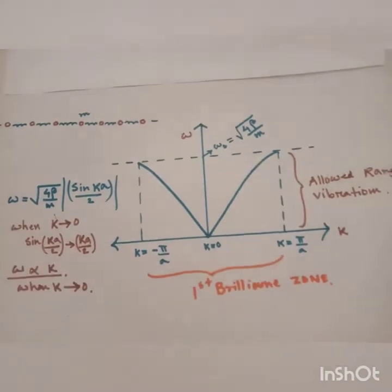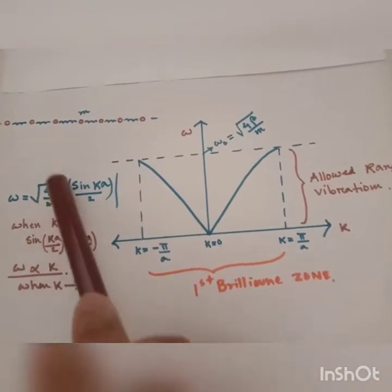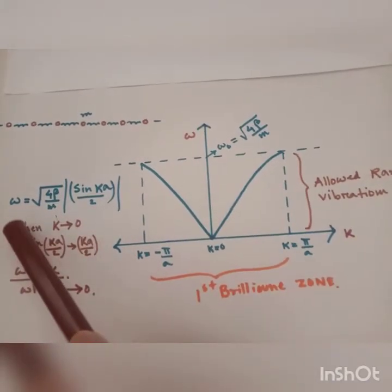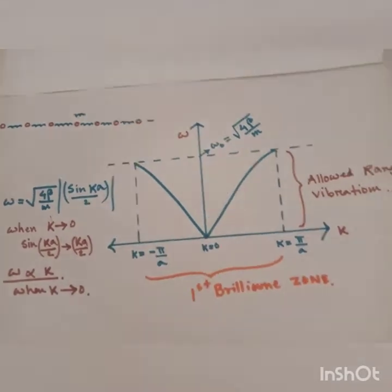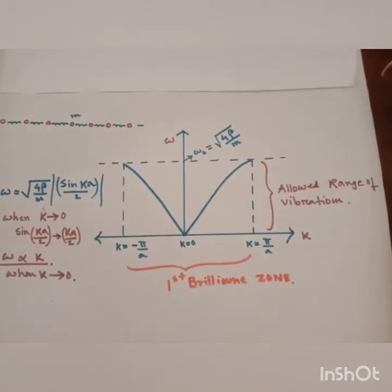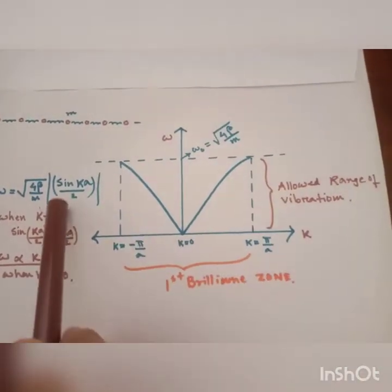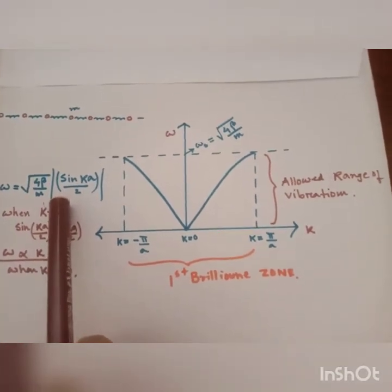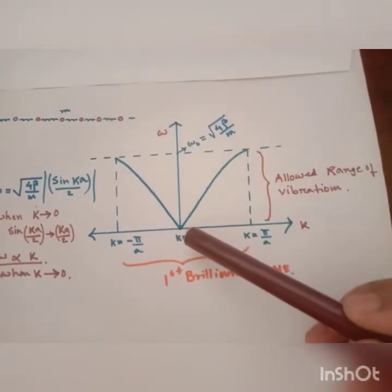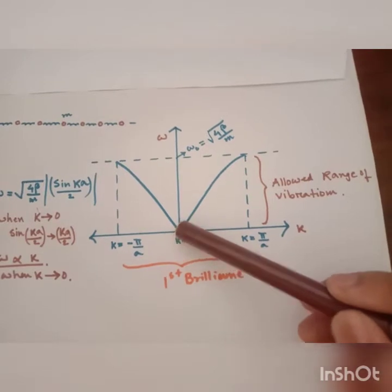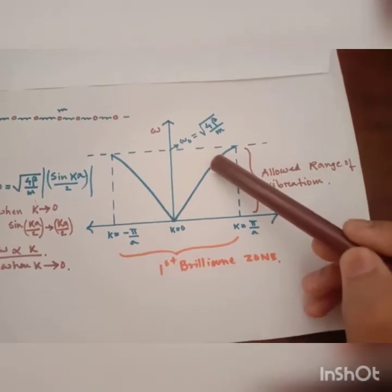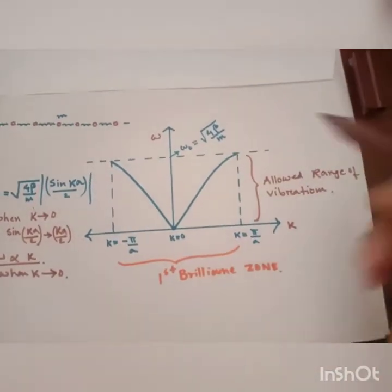Now the question arises: how do we draw the graph between omega and k? As you can see, this part of the equation is constant, so omega varies as sin ka/2, which is sinusoidal. By seeing this, you might argue that the graph should be curved, but the graph is not curved. It is somehow linear and after going some distance it ends. So actually the graph is like this.